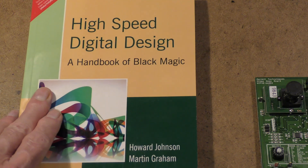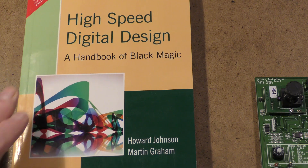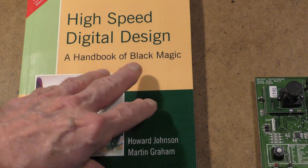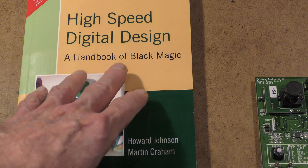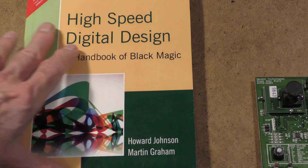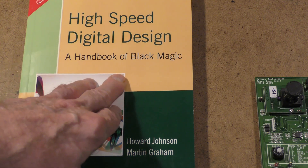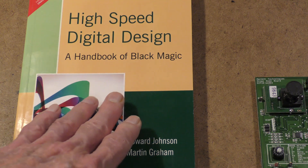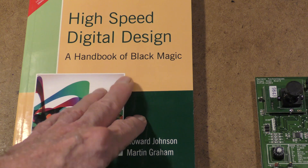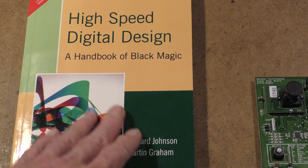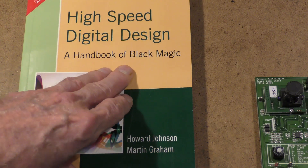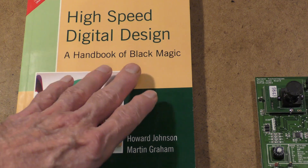I've mentioned this book before — High-Speed Digital Design: A Handbook of Black Magic. In terms of the real, down-to-earth — what do you need to beware of, and how can you find problems in high-speed digital designs — this is probably the best resource I know of. There is a copy available on the web, but I prefer printed copies. I had a copy of this and I loaned it out; it never came back, so I bought another copy, which shows you that I really do prefer written books.